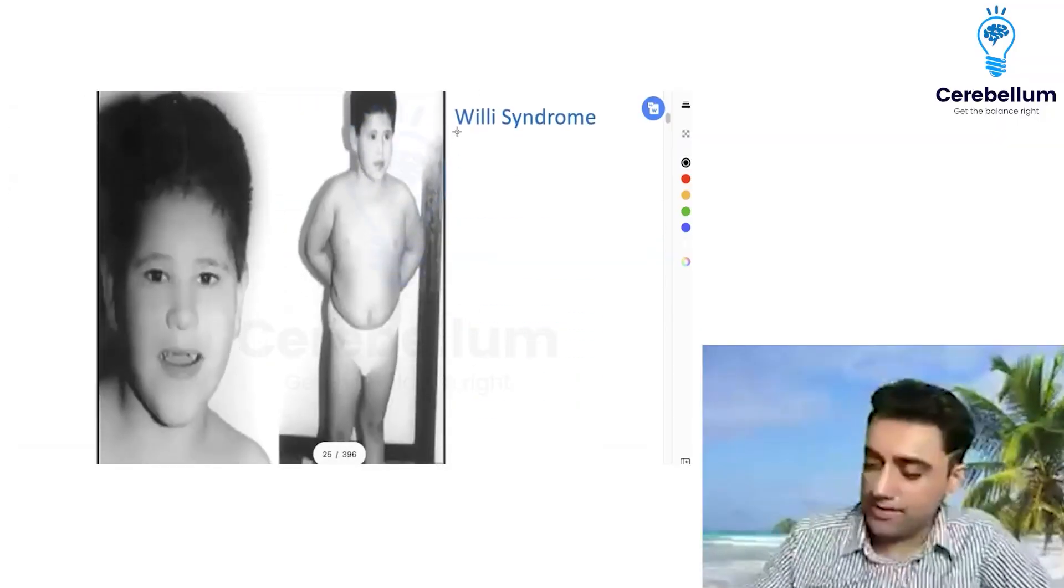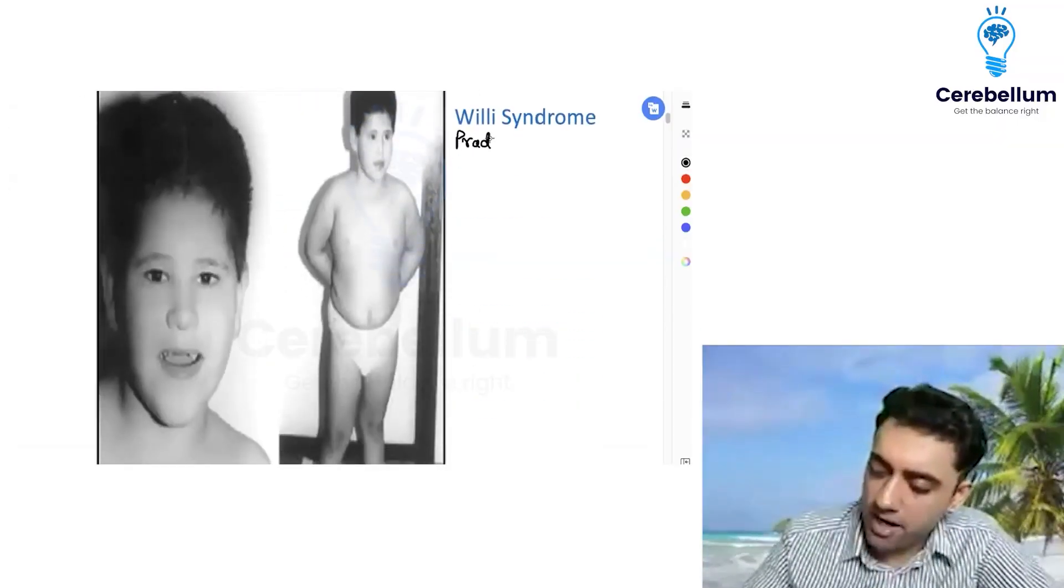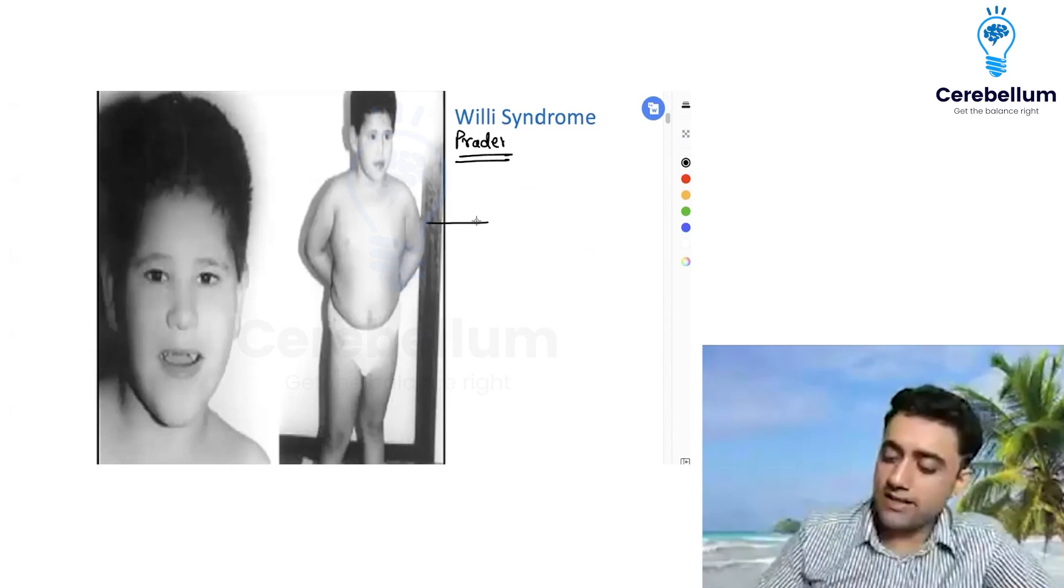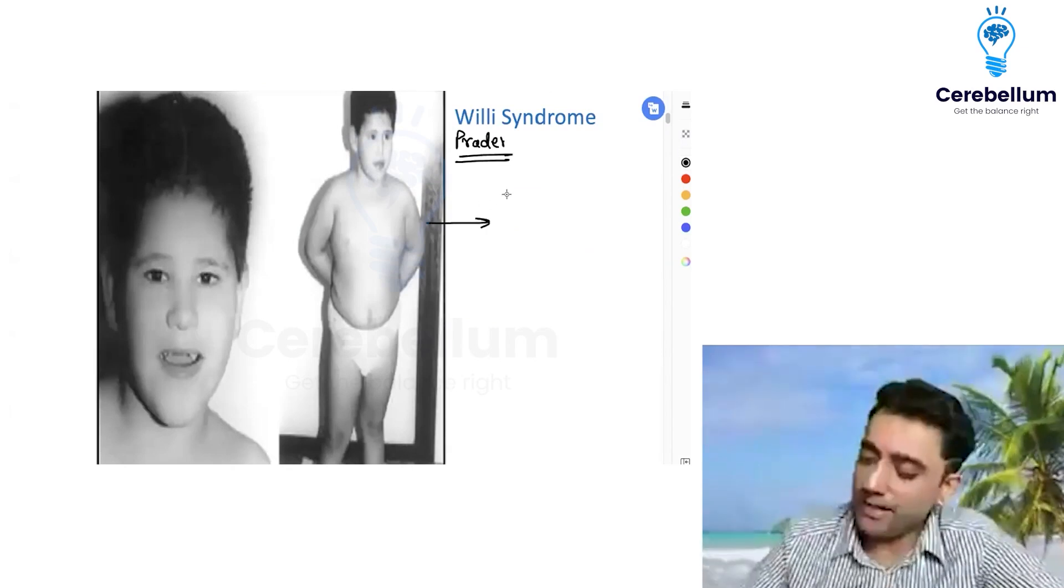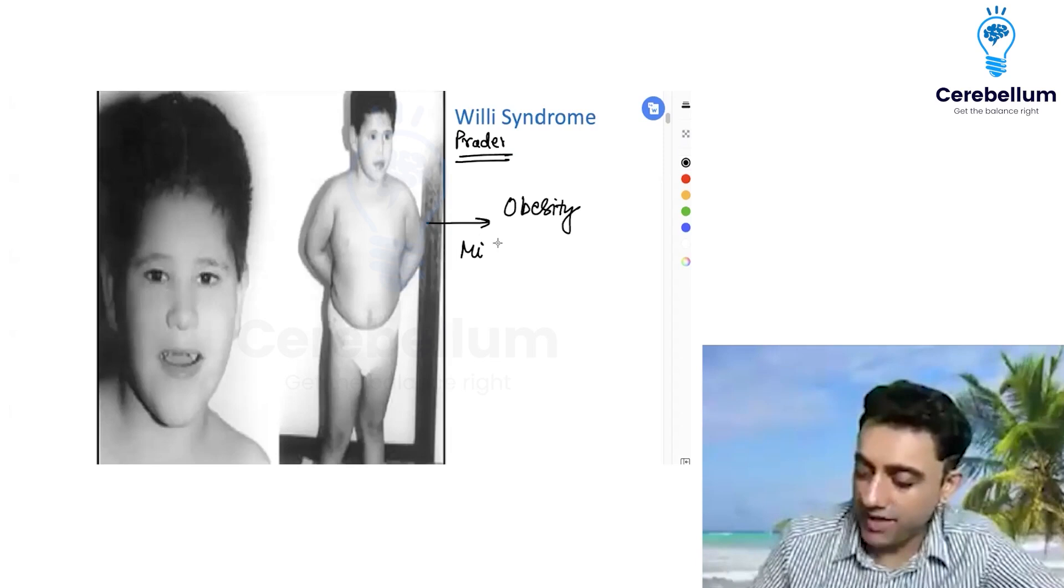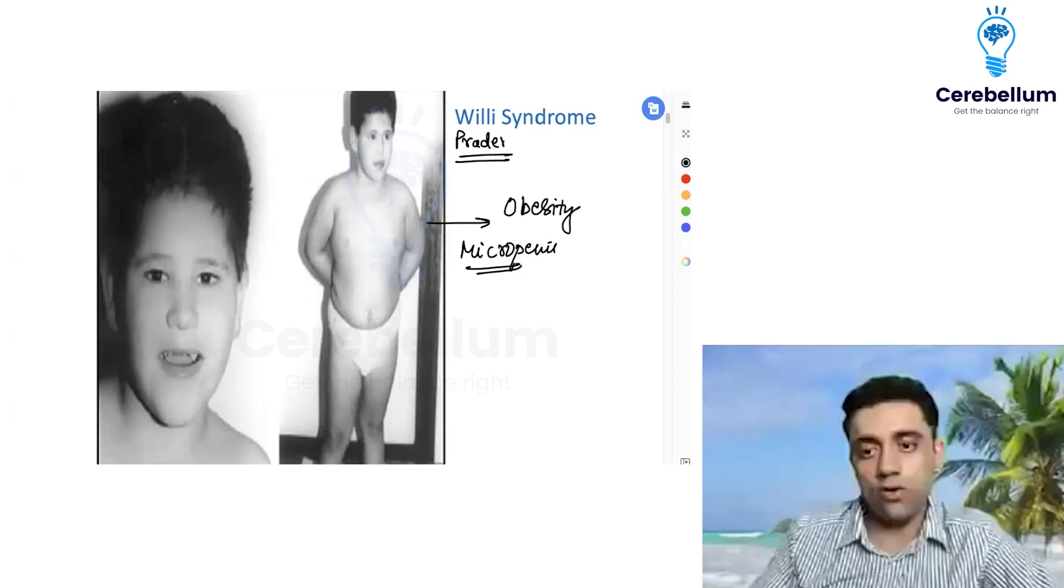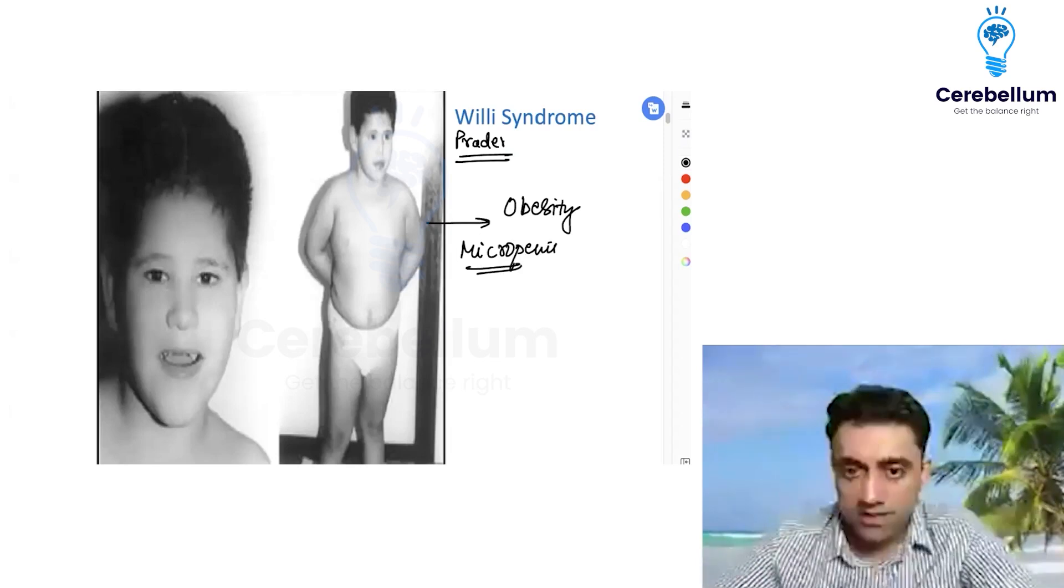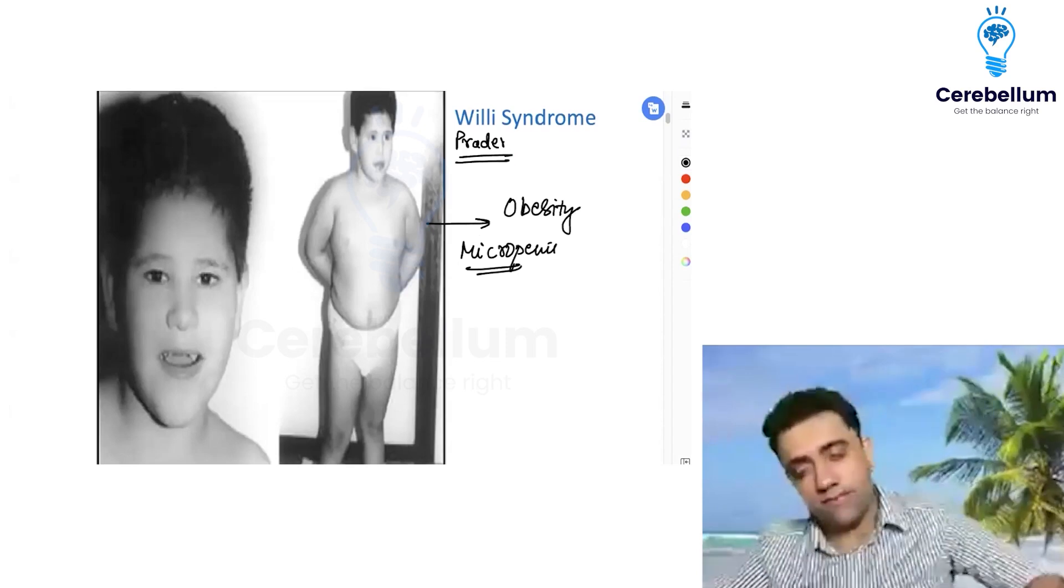The next question we have is Prader-Willi syndrome, again a very important topic. By looking at this patient, what can we make out? It'll be an obese baby with micropenis. Obesity with micropenis is one important feature.